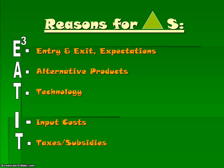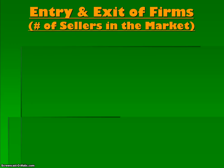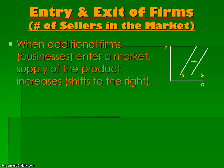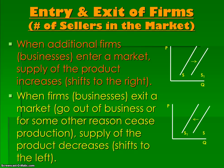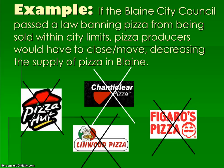Entry and exit of firms, or the number of sellers in the market, simply means that when additional firms or businesses enter a market, the supply of the product will increase or shift to the right. When firms exit a market or cease production, supply of the product will decrease or shift to the left. For example, if the Blaine City Council passed a law banning pizza from being sold within city limits, pizza producers would have to close or move, decreasing the supply of pizza in Blaine — the supply curve would shift to the left.